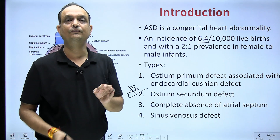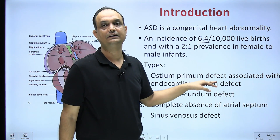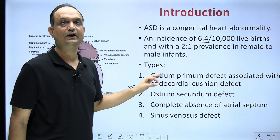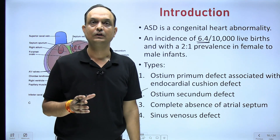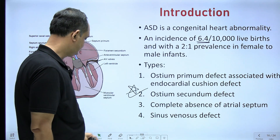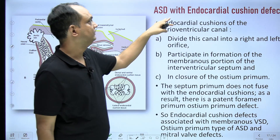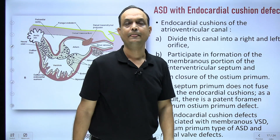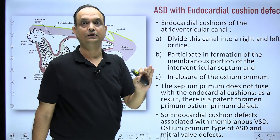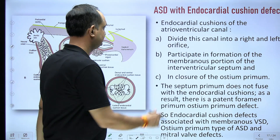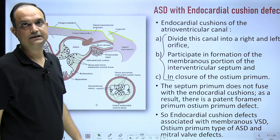Ostium primum defects not only affect the atrial septum, but this defect always affects the ventricular septum as well as the formation of the atrioventricular valve. We will discuss this one by one, starting with atrial septal defect with endocardial cushion defect. The endocardial cushion contributes to the formation of three areas.